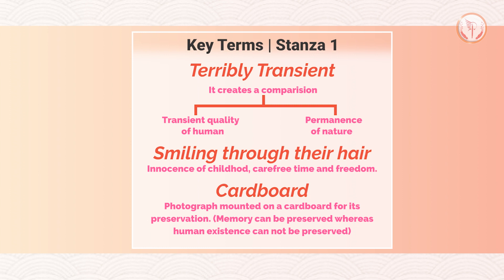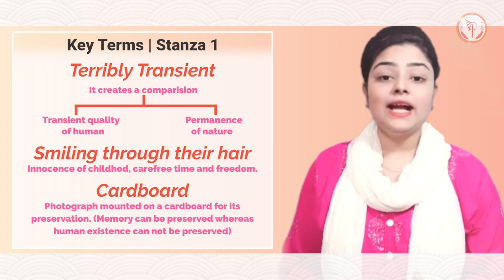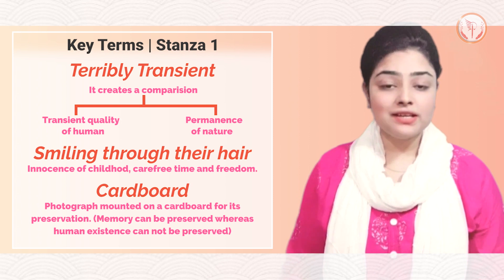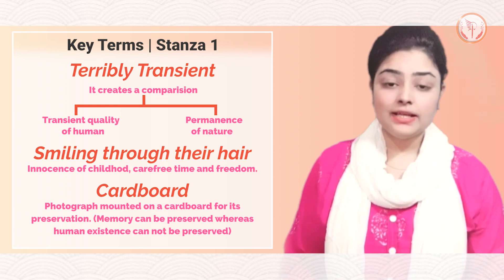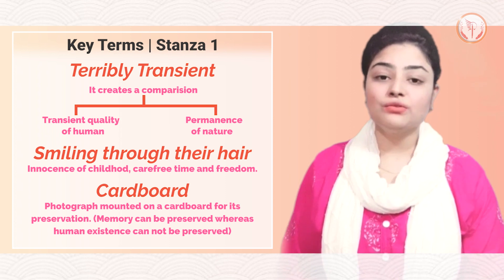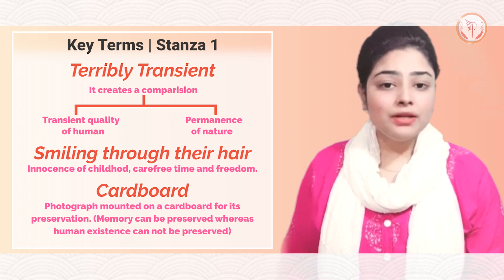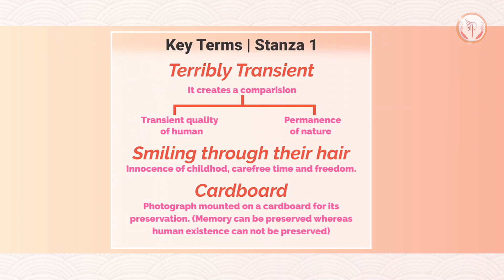The phrase 'terribly transient feet' describes the passage of time. It creates a comparison between two things: the transient quality of human existence and the permanence of nature. Humans are temporary and they stay only for a few years — they cannot live forever. That is why the word 'transient' is used with 'feet', showing the temporary quality of human existence.